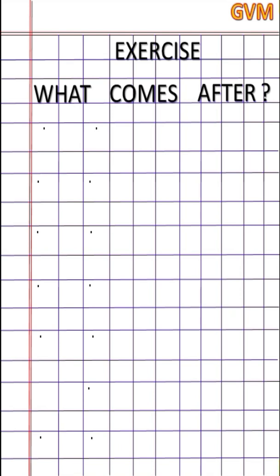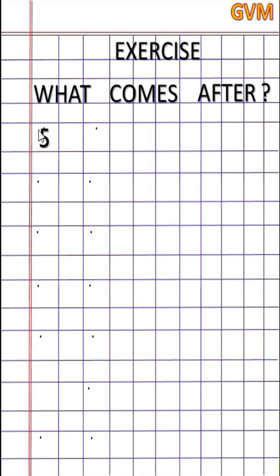Children, we will find out 'what comes after' and write it in this type of notebook. We will write on the margin line. You have to leave the margin line and write on the proper line. We will put a dash for the blank where the next number goes. Write from left to right on the proper line.